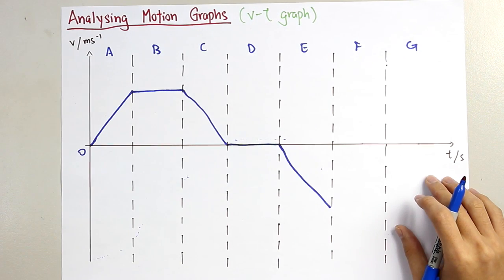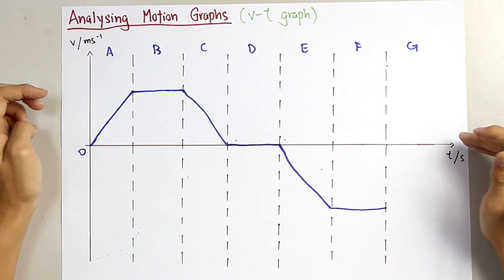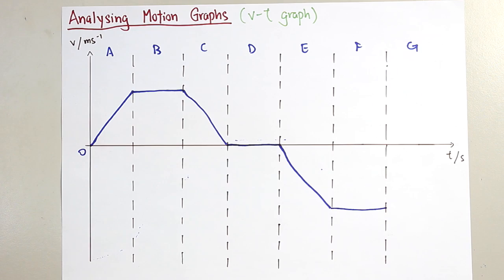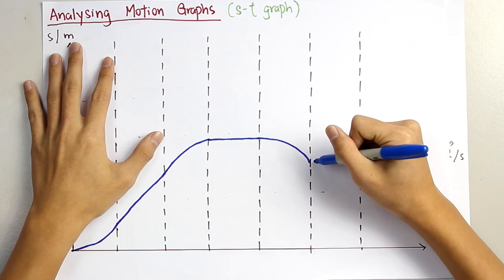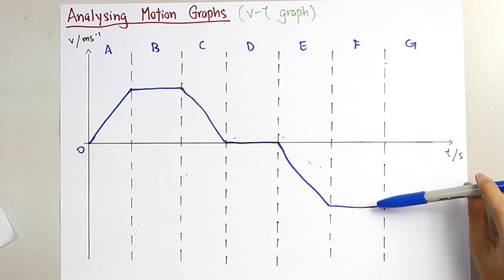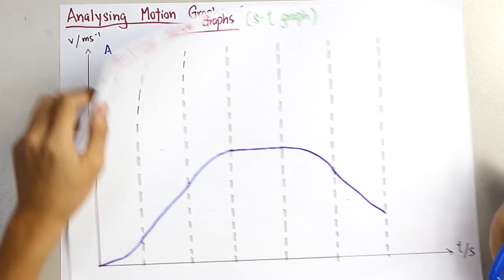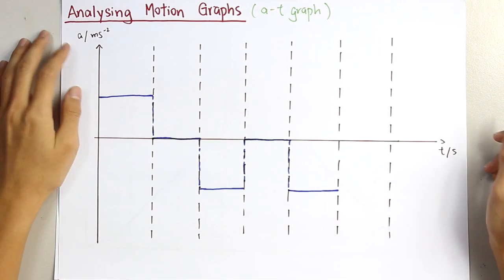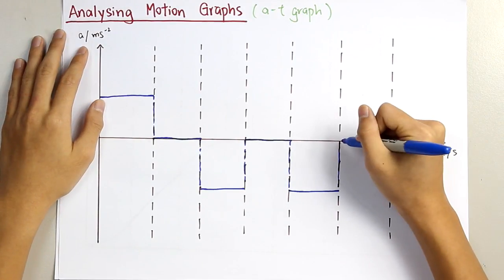Next, for section F, a constant velocity below the negative line, which is a negative constant velocity. For the ST graph, when there is a constant velocity it will be a straight line. However, this is a negative velocity, so the gradient for the ST graph will be negative. For the AT graph, there is constant velocity in negative value, but there will be zero acceleration.